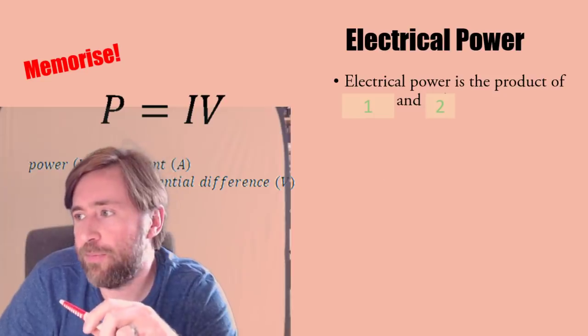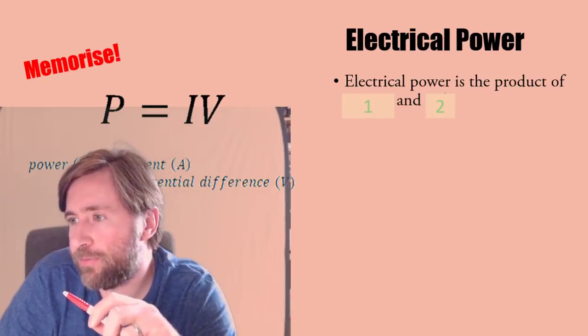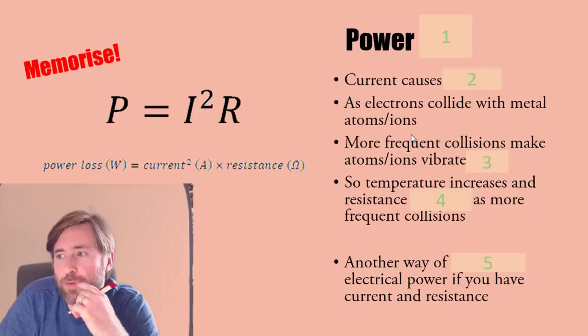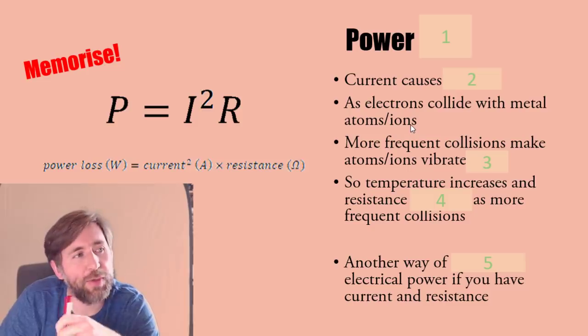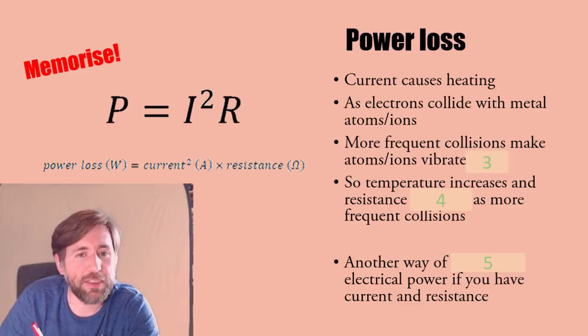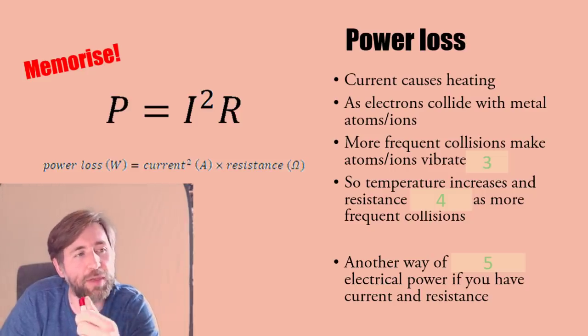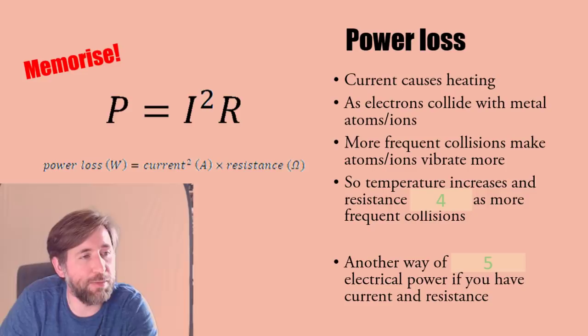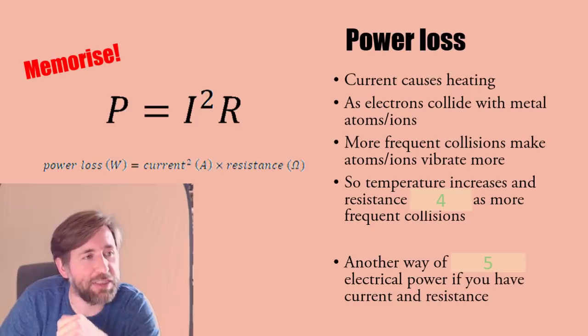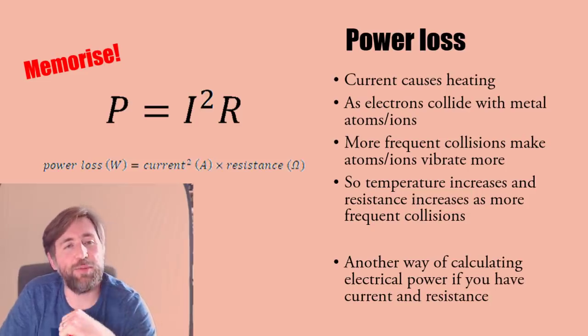Electrical power is current times voltage. It's just the product of current and voltage. Power is also I squared R, current squared times resistance. This is a good calculation if you're given current and resistance. It's the explanation that current causes heating - electrons collide with metal atoms or ions, more frequent collisions make them vibrate more. Temperature increases, resistance increases.